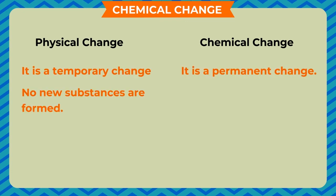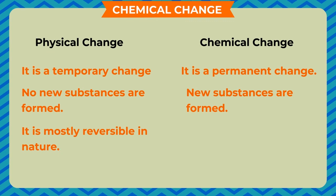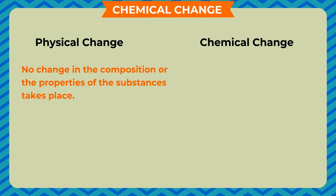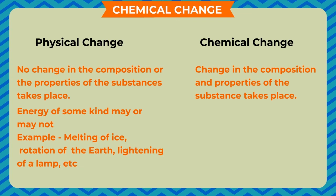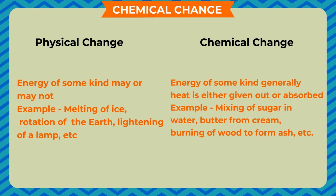Difference between physical and chemical changes: A physical change is temporary; a chemical change is permanent. No new substances are formed in a physical change; new substances are formed in a chemical change. Physical changes are mostly reversible; chemical changes are always irreversible. No change in composition or properties occurs in physical changes, whereas composition and properties change in chemical changes. Energy may or may not be absorbed in physical changes (e.g., melting of ice, rotation of the earth, lighting of a lamp), while in chemical changes energy is generally given out or absorbed (e.g., burning of wood to form ash, making butter from cream).